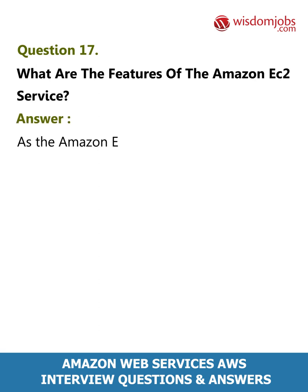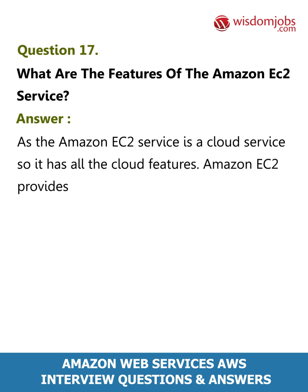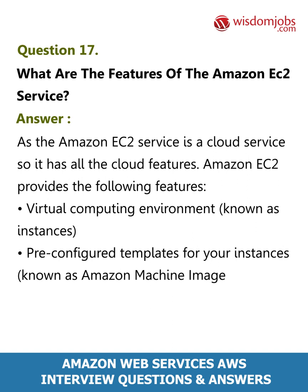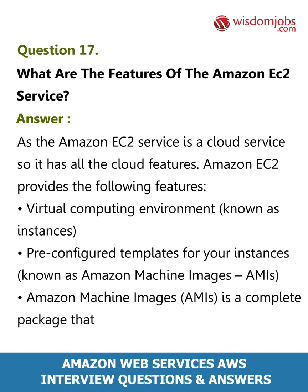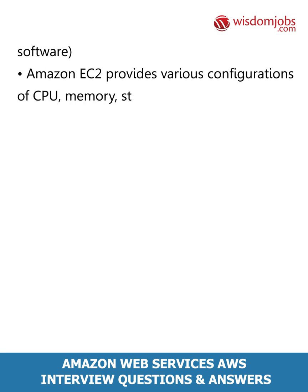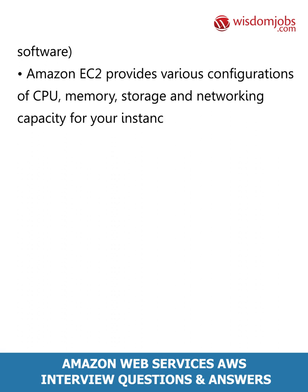Question 17: What are the features of the Amazon EC2 service? Answer: As Amazon EC2 is a cloud service, it has all the cloud features. Amazon EC2 provides the following features: virtual computing environments known as instances; pre-configured templates for your instances known as Amazon Machine Images (AMIs). AMIs are a complete package that you need for your server, including the operating system and additional software. Amazon EC2 provides various configurations of CPU, memory, storage, and networking capacity known as instance types.